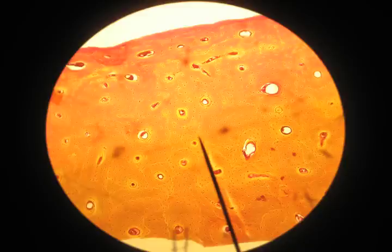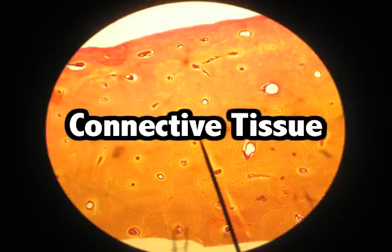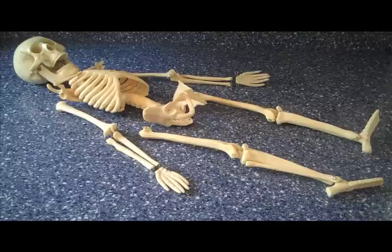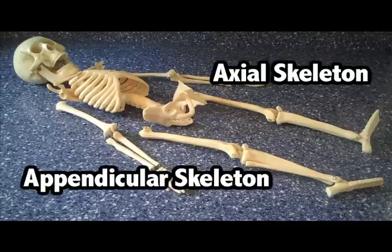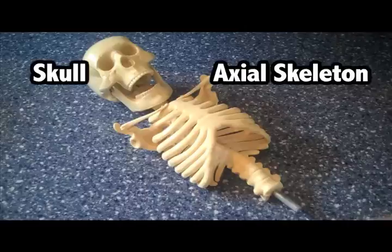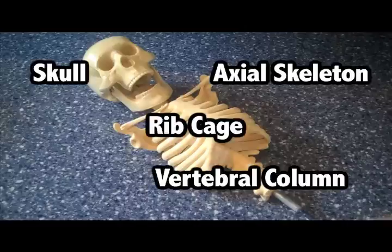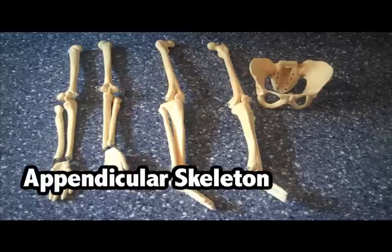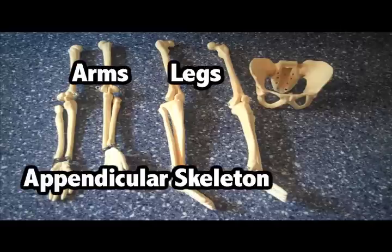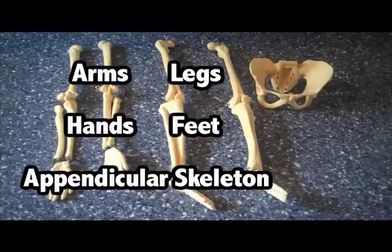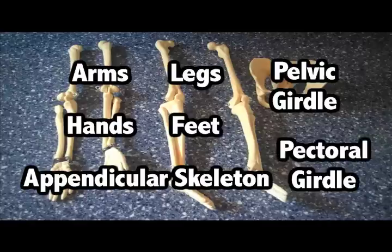Bone tissue is also known as connective tissue. The skeletal system is divided into two parts, the axial skeleton and the appendicular skeleton. The axial skeleton contains the skull, vertebral column, and the ribcage. The appendicular skeleton contains the arms, legs, hands, feet, pelvic girdle, and pectoral girdle.